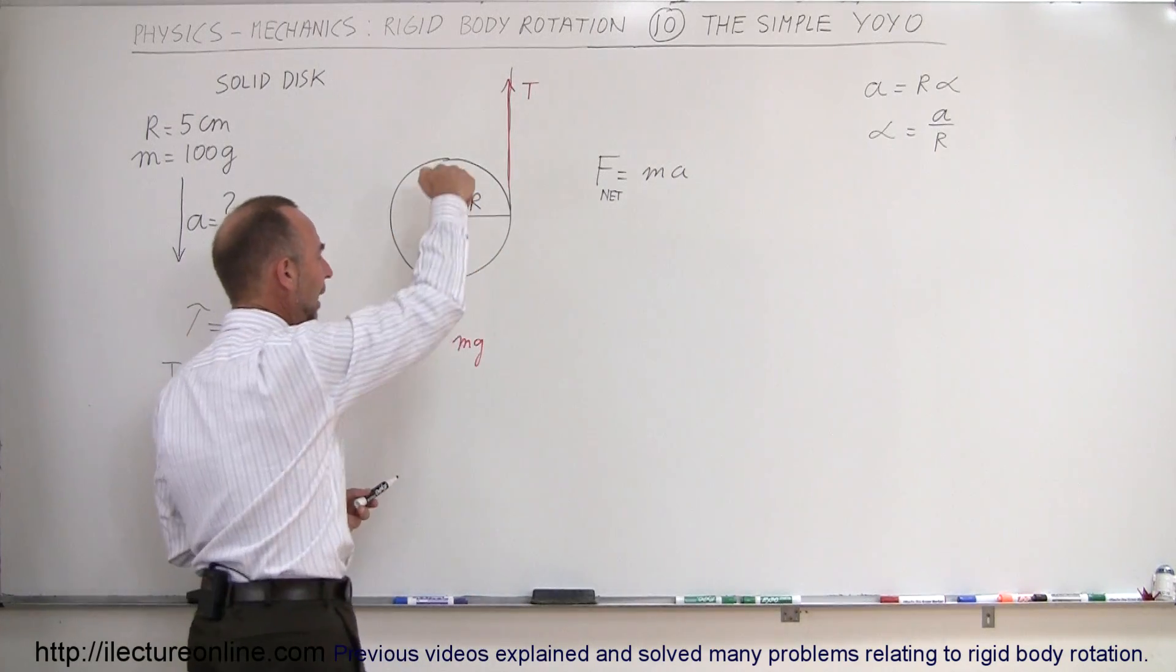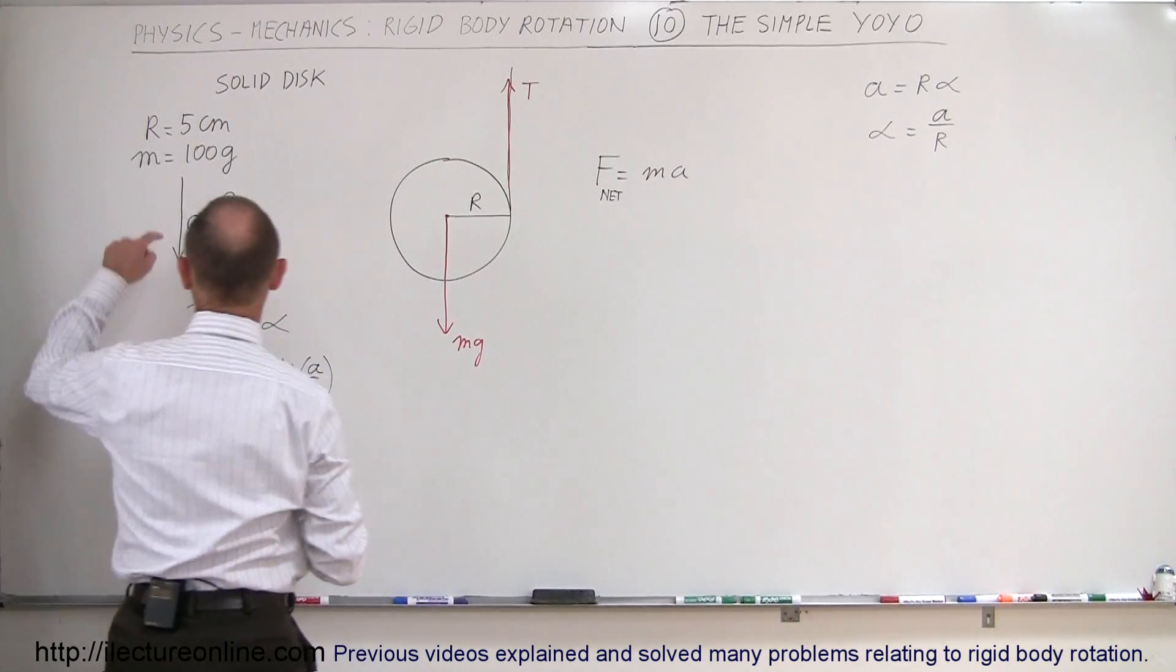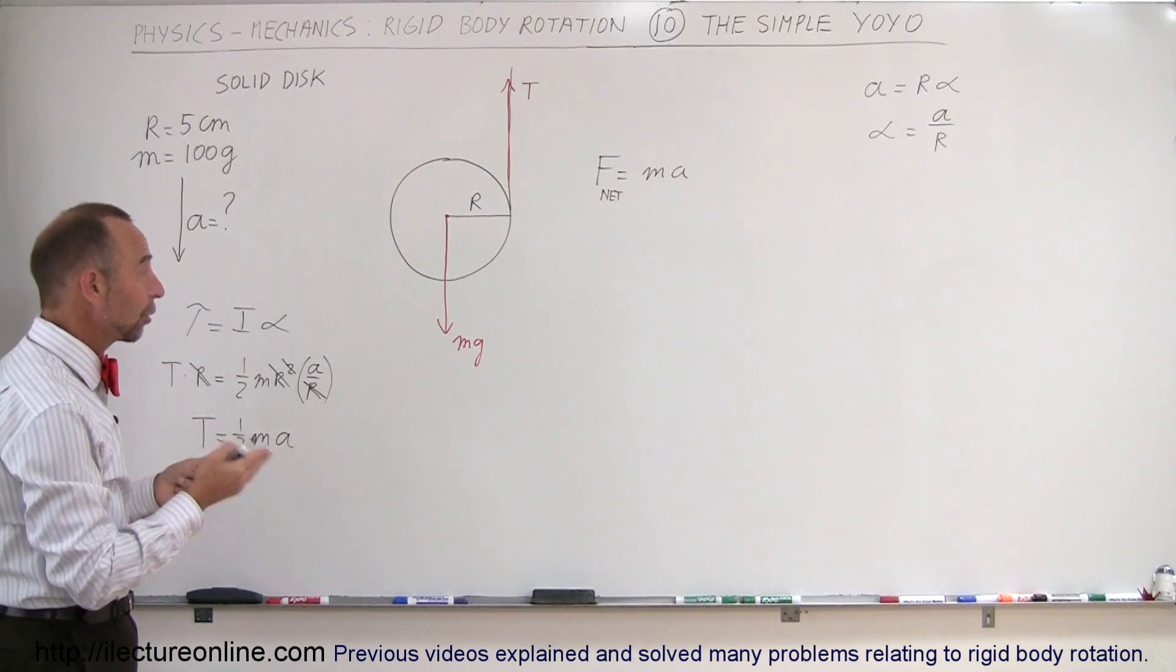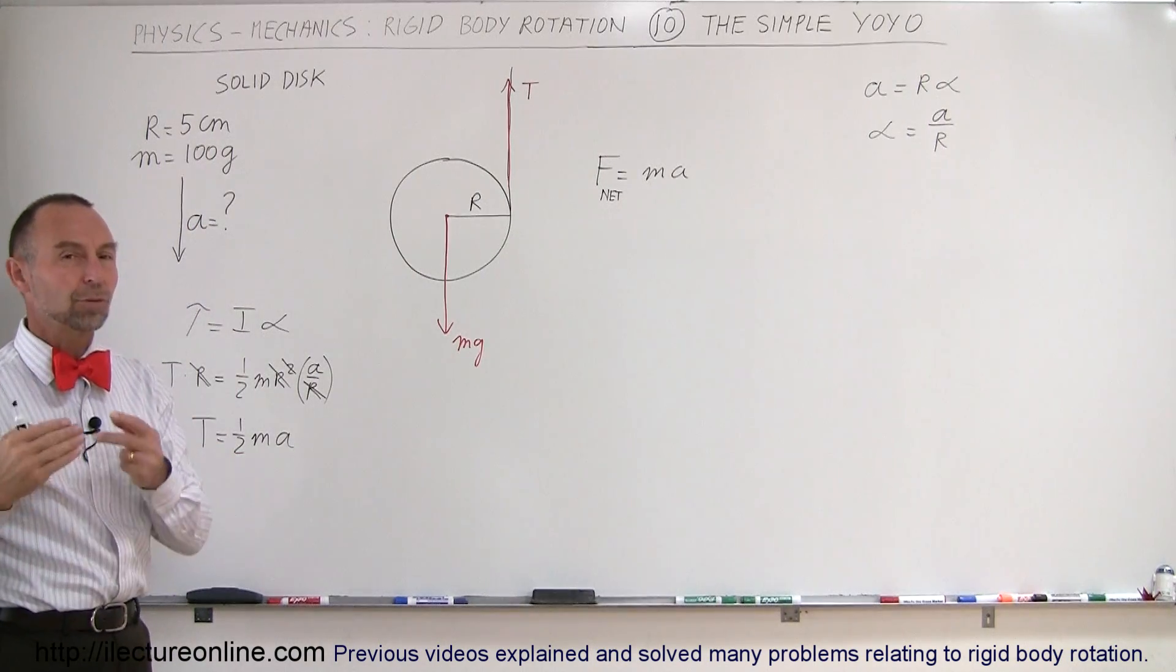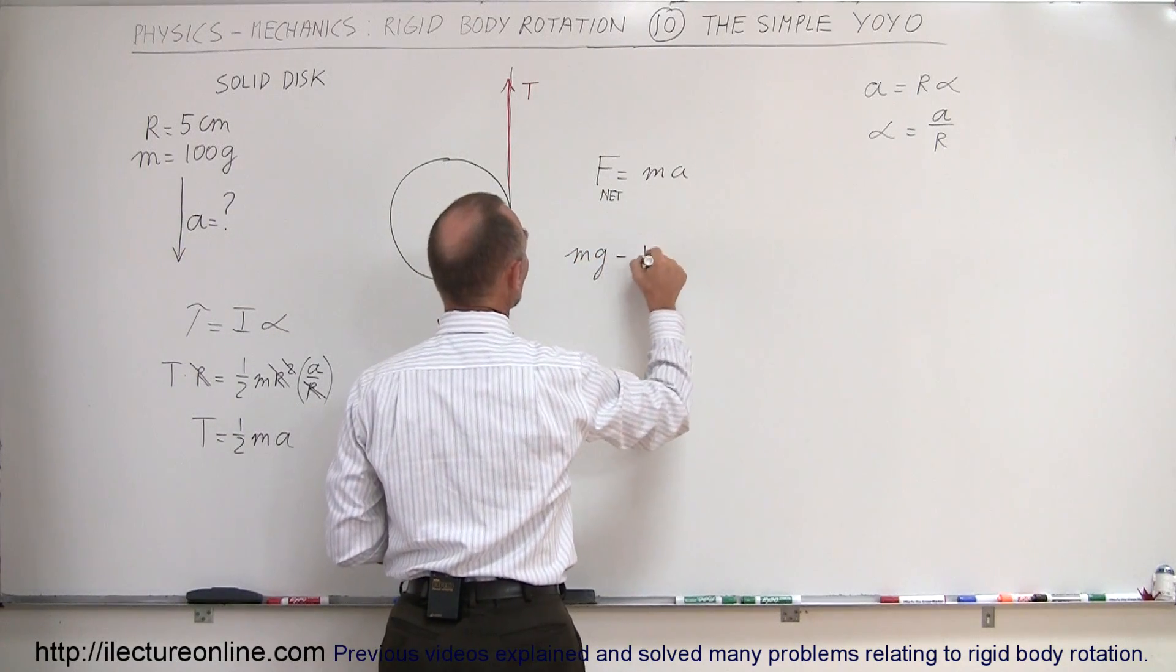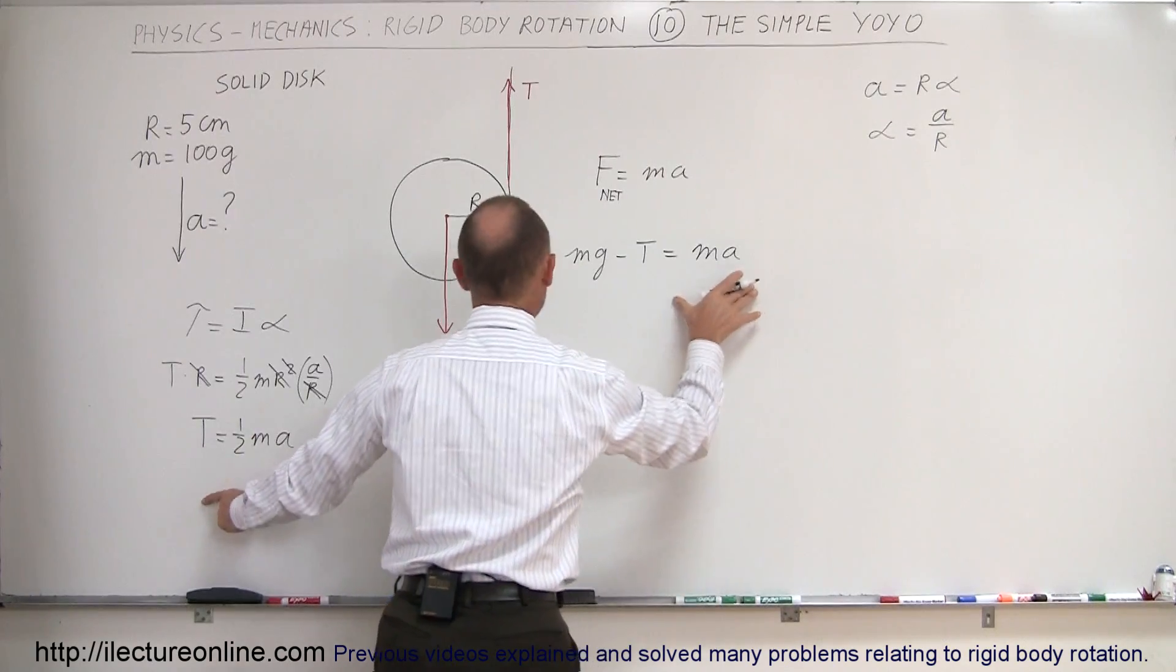Now you'll wonder, why do I call MG positive and tension negative? Well, I can assume that the acceleration is going to be this way, and all the forces aiding the acceleration are positive, and all the forces opposing the acceleration are negative. So in this case we end up with MG minus the tension equals MA, and now we're going to combine the two equations.